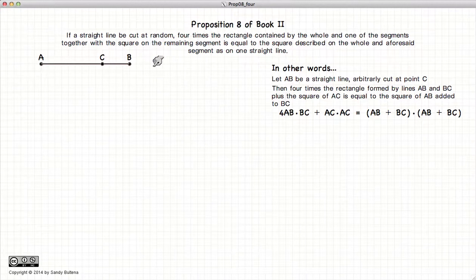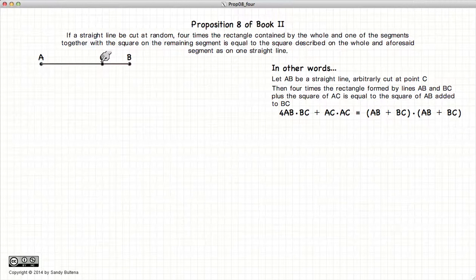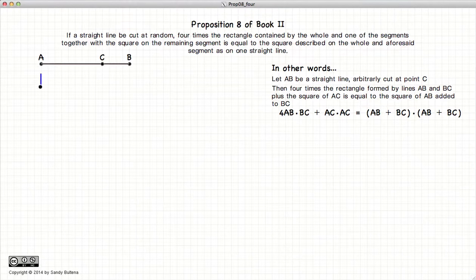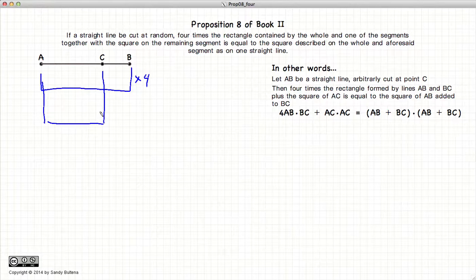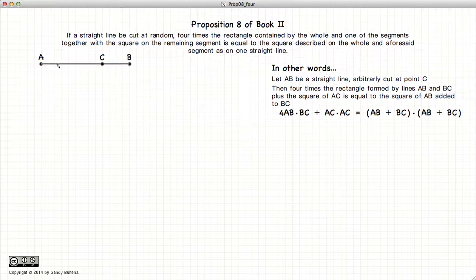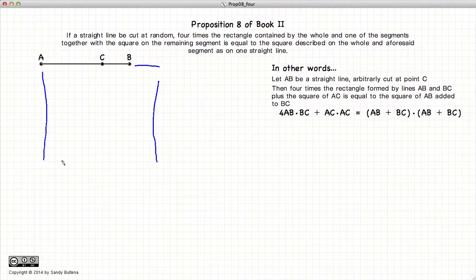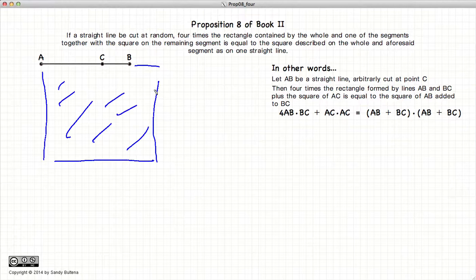if we have a line segment AB cut at an arbitrary point C, then the rectangle formed by AB and CB times 4 plus the area of the square of AC will be equal to AB plus an additional distance again of CB of this whole thing squared. Alright, so that's what we're going to demonstrate.